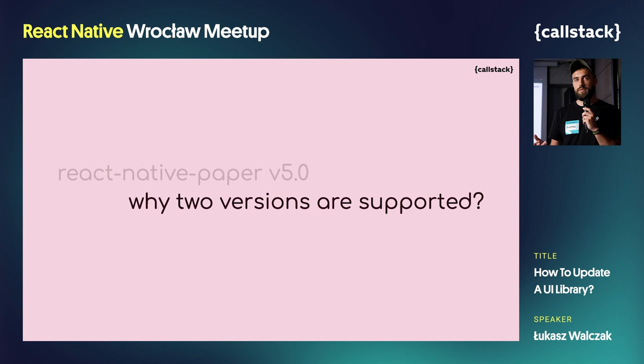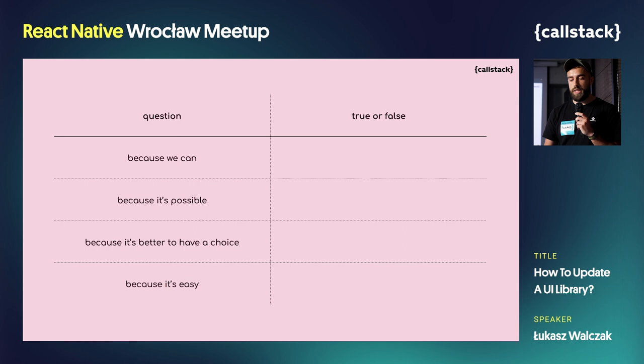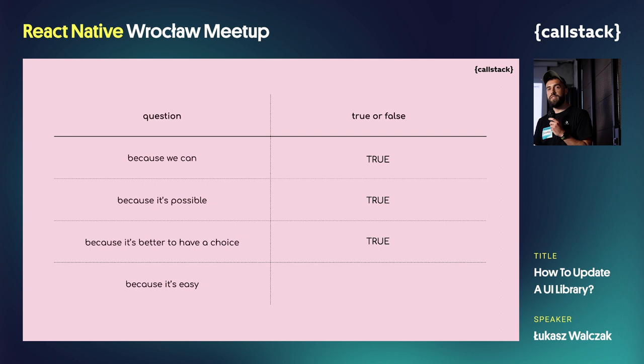At the beginning, when Material U was released, we received different and divided personal opinions about the new design generation. However, it was clear for our team that Paper would certainly support it. We decided to support both versions because we have a really solid team which could handle that, because changes are mostly concerned with visual aspects followed by API changes, and because we believe it's better to have a choice — it's up to the user which material design generation fits more into their product or needs.